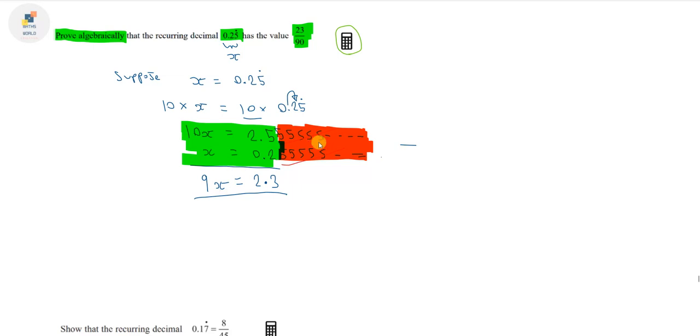So we know that 9x equals 2.3. Now how can we get rid of this decimal? We can again times both sides of this equation by 10. So 9x times 10 will be 90x. 2.3 times 10, we just move the decimal place one point to the right, so that will be 23. You might be wondering why is 9x times 10 equal to 90x? Well 9x times 10 is the same as 9 times x times 10, which is 9 times 10 times x, which equals 90x.